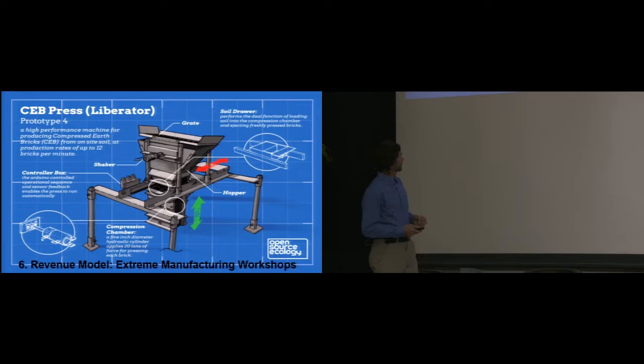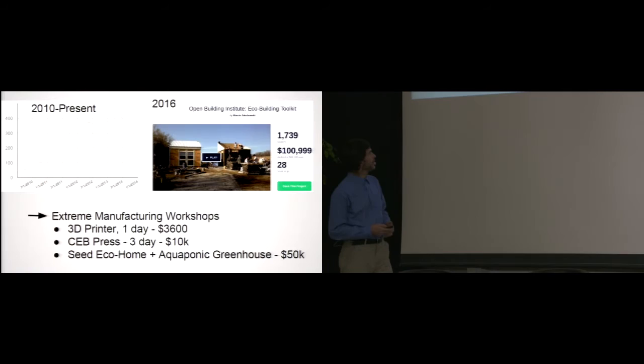The sixth milestone we've achieved is the extreme manufacturing model, the business model for doing that in workshops. The way it works is that we produce the machine, we charge people for an educational experience and then we can also sell the machine. The way we fund ourselves is 80% right now we fund ourselves through the workshops. Extreme manufacturing workshops.